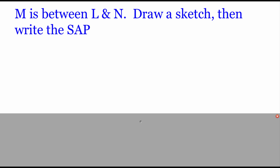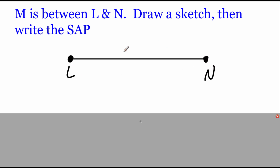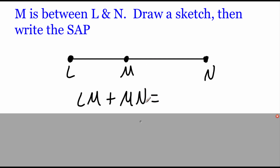In this example it says that point M is between points L and N. Pause the video, draw a sketch of what this would look like, and write out what the segment addition postulate would look like using these points. So if we draw this out: here's our line, on the left hand side point L, on the right hand side point N, and somewhere between those points is point M since it's between L and N. Writing out our segment addition postulate: the first small piece is LM, plus the other small piece MN, and if we add those together the big long piece is LN.